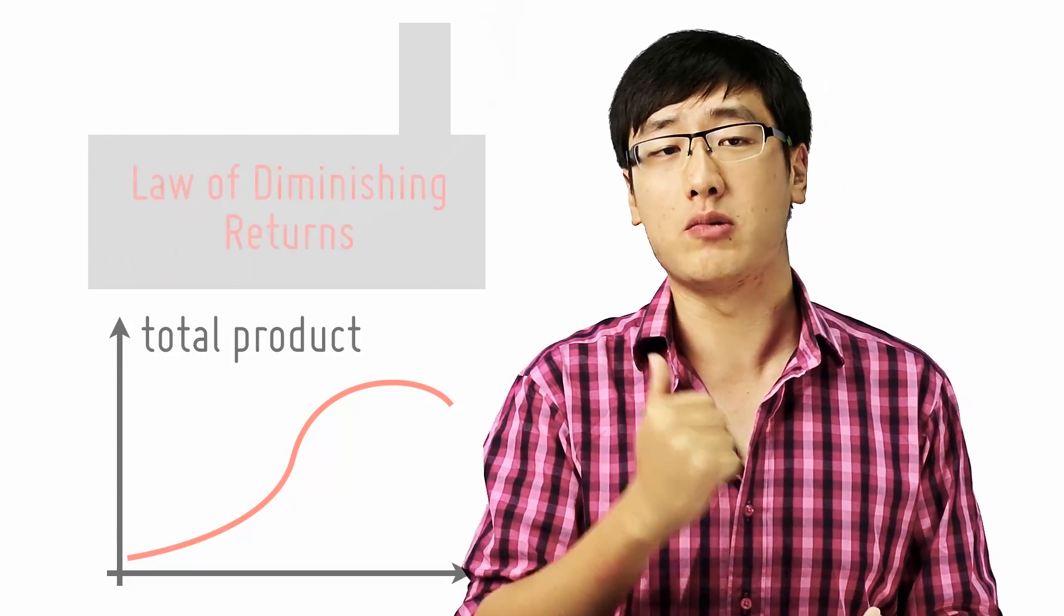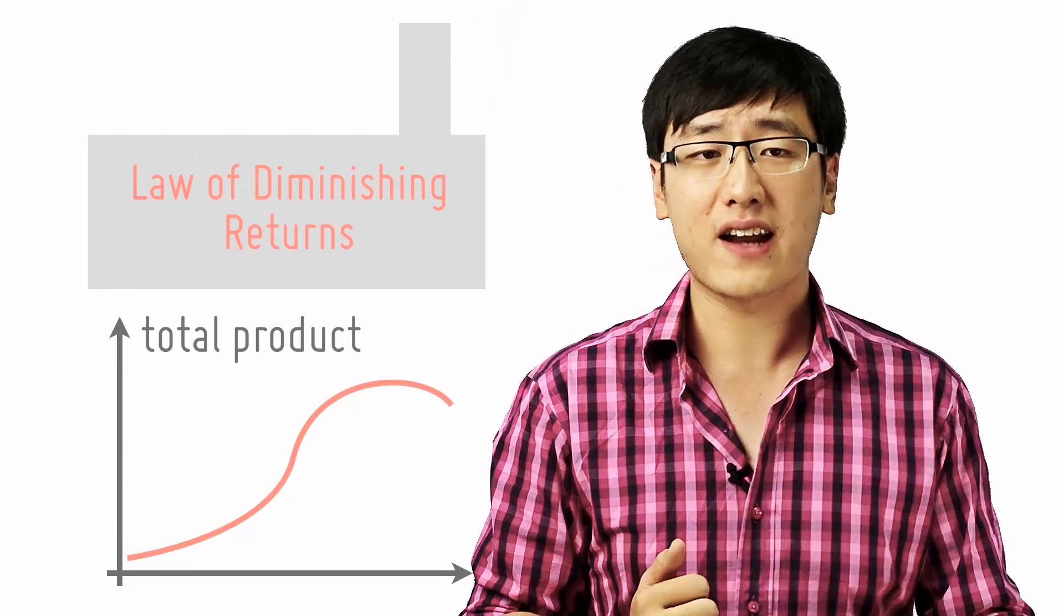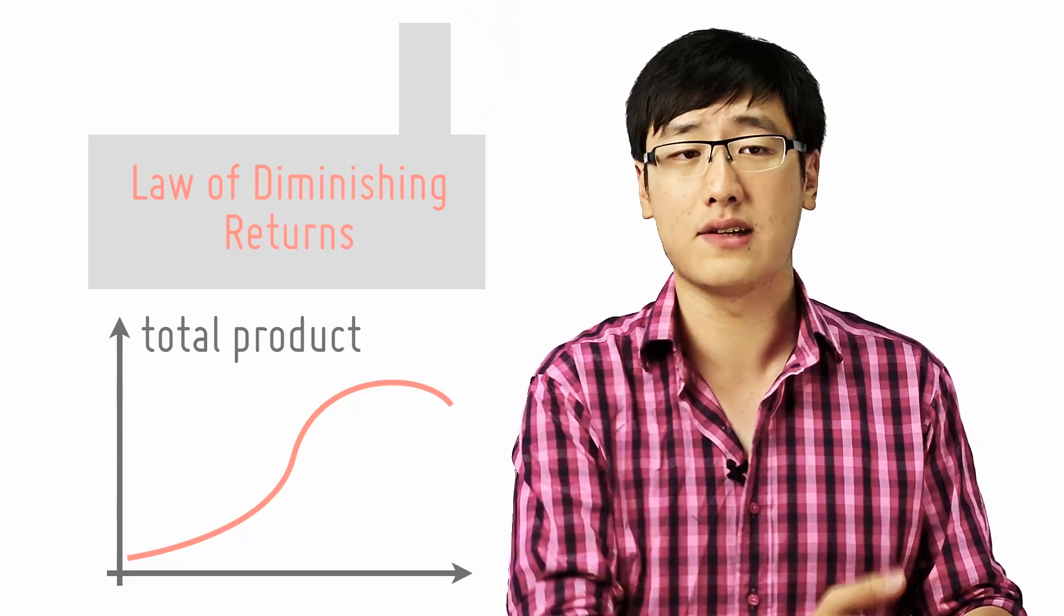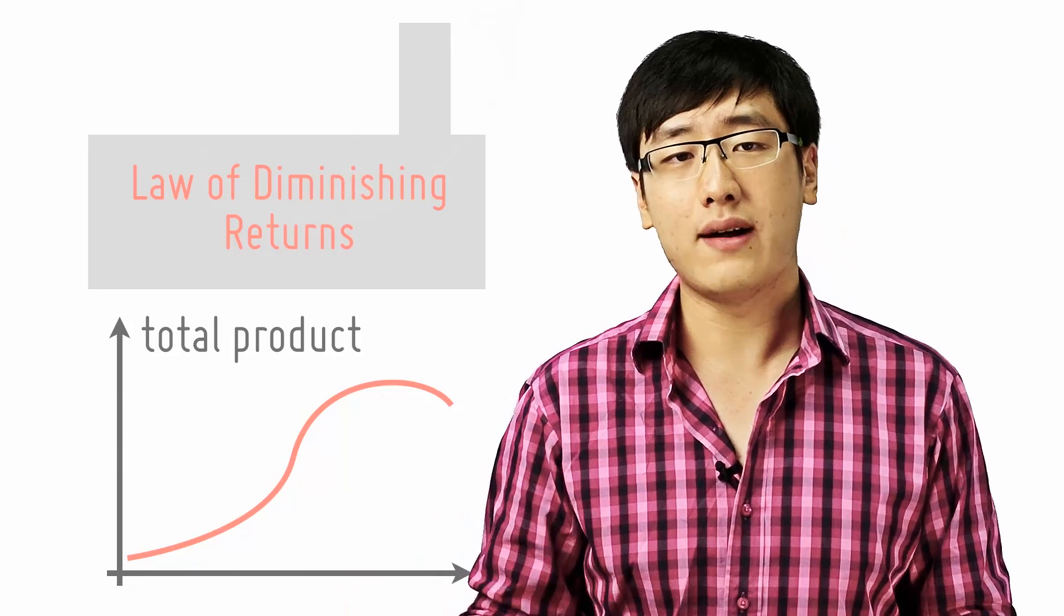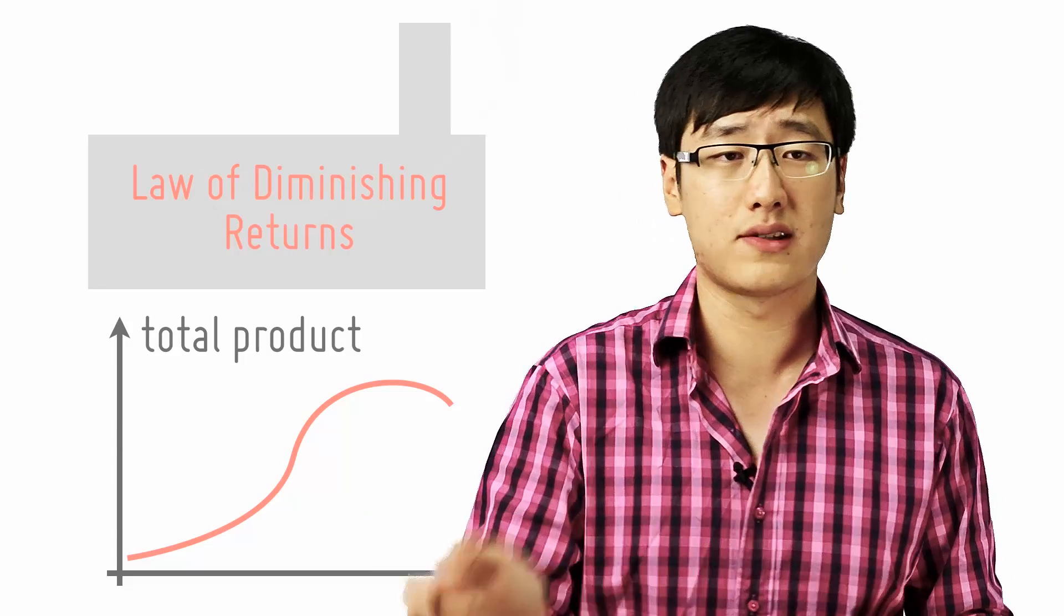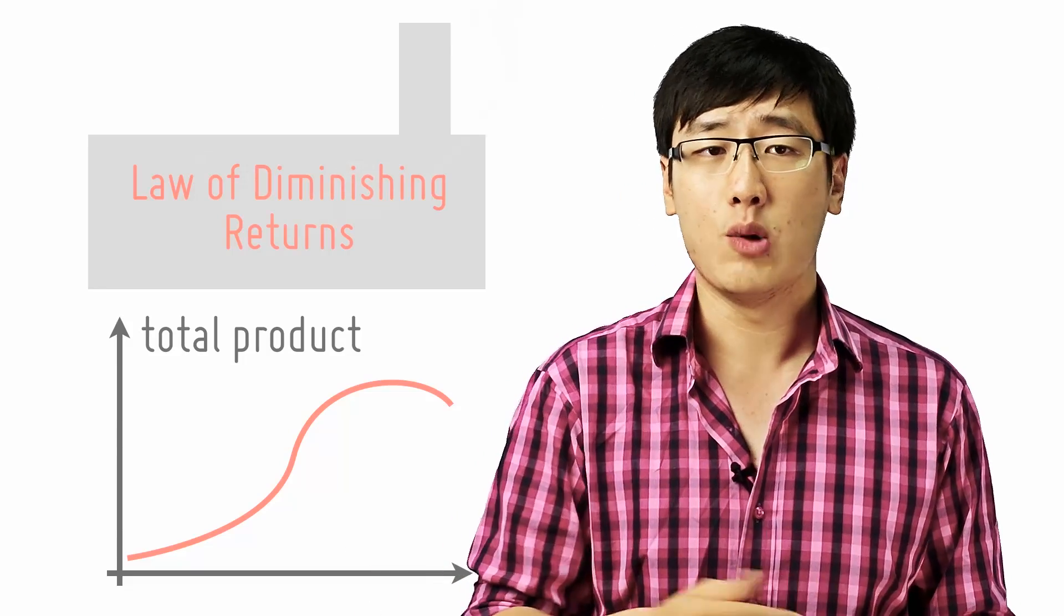So this is the law of diminishing returns. When one factor or more is held constant, in this case the size of a factory, there comes a point beyond which the extra output from additional units of labor or the variable factor will diminish.